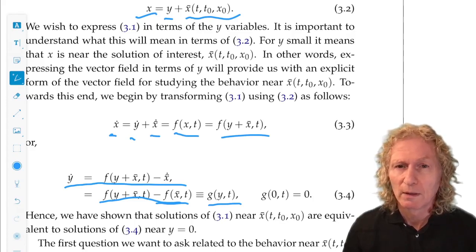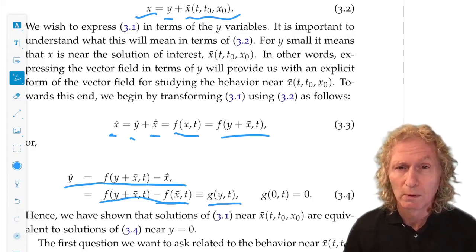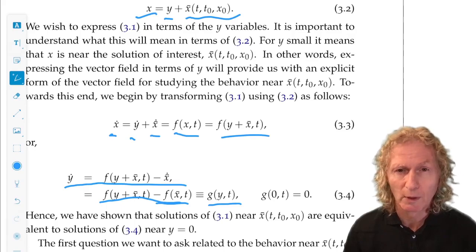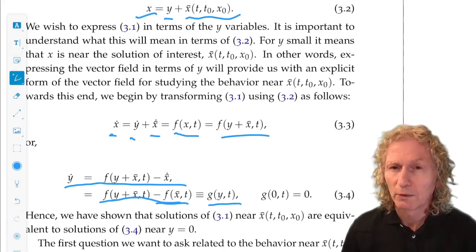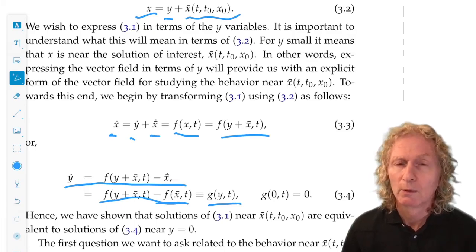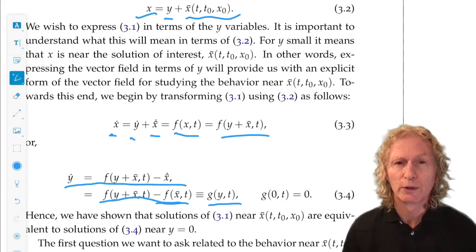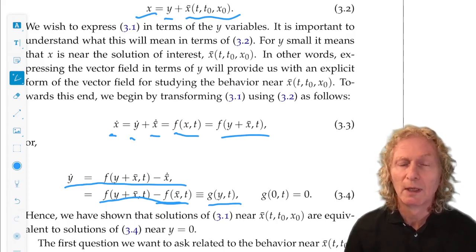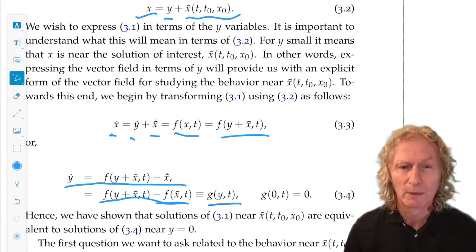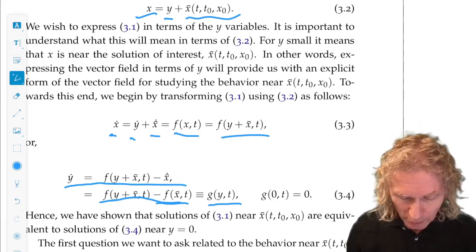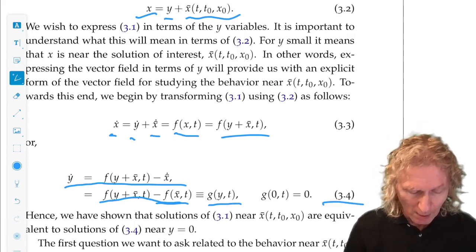Now we see that g(0,t) = 0. Just substitute it in. So y equals zero, which puts us on the solution that we're interested in, x̄(t), is an equilibrium point of this new equation.